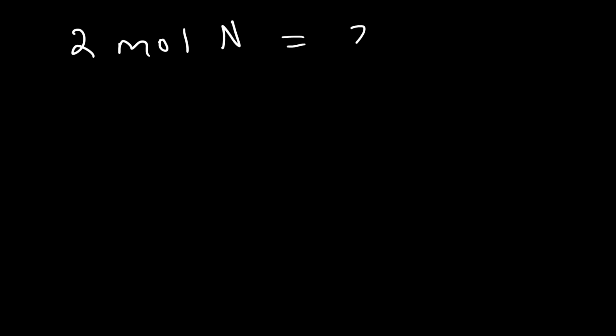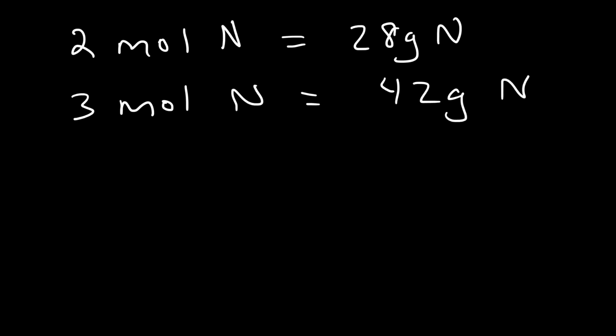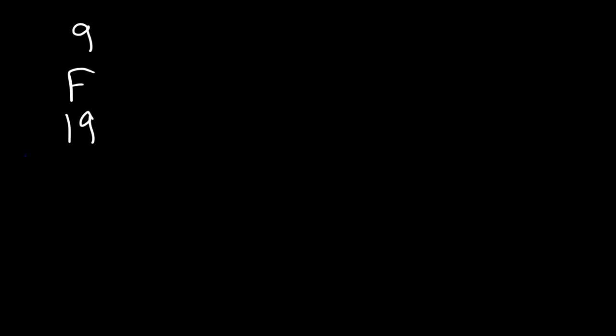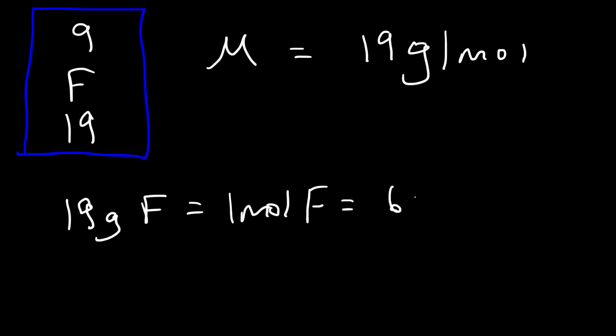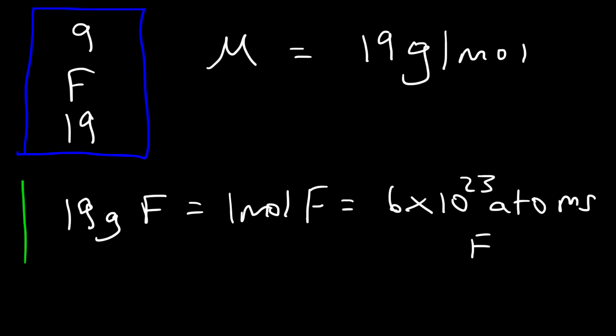So if I have 2 moles of nitrogen atoms, this would have a mass of 28 grams of nitrogen. If I have 3 moles of nitrogen, that's going to be 42 grams of nitrogen — 3 times 14. The mole is proportional to the mass, and thus you have the expression molar mass: the mass of an element when you have 1 mole of substance. Another example is fluorine, with an atomic number of 9 and a mass number of 19. So the molar mass of fluorine is 19 grams per mole, meaning 19 grams of fluorine equals 1 mole of fluorine, which is 6 times 10 to the 23 atoms of fluorine. So now you know how to connect grams to moles to atoms.